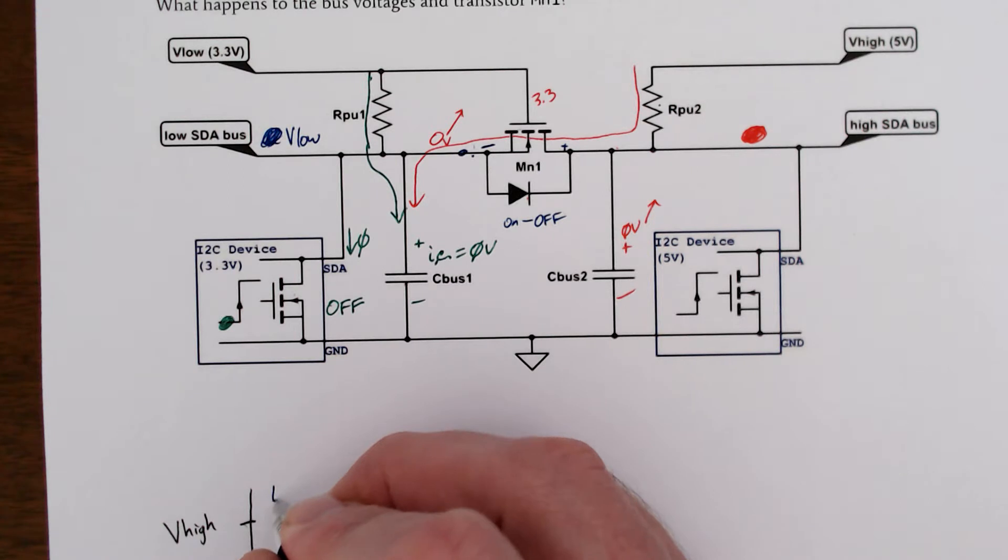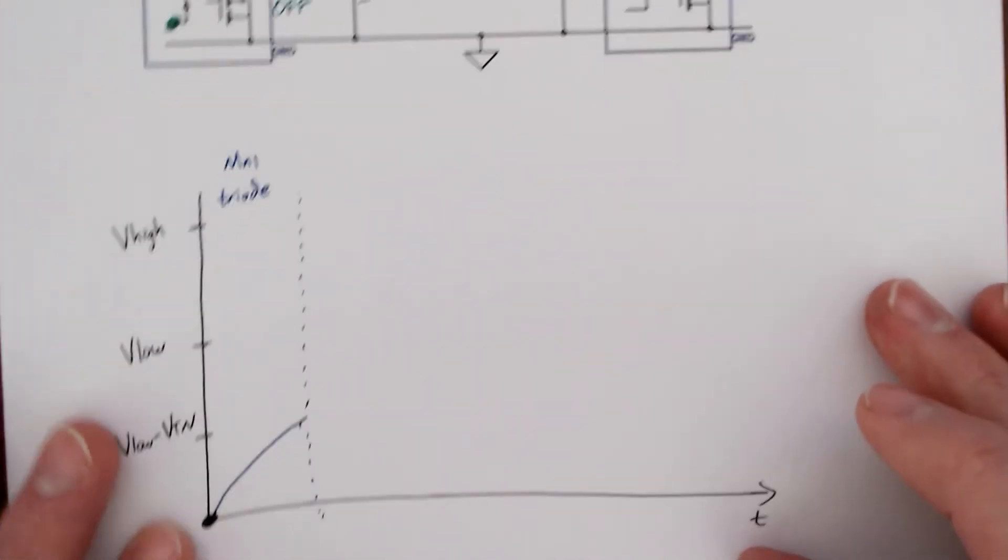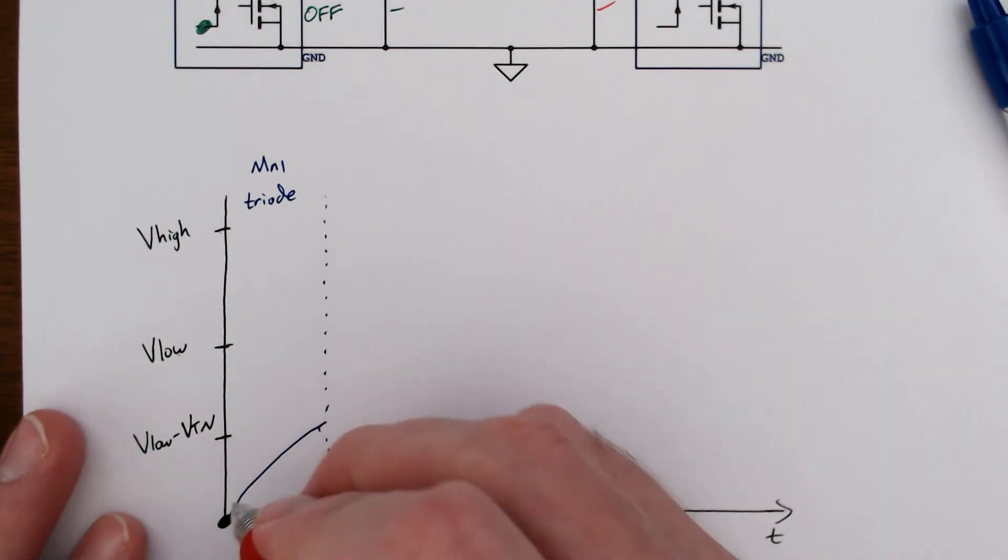And in this region, transistor MN1 is in triode mode. At the same time, we have our right side.